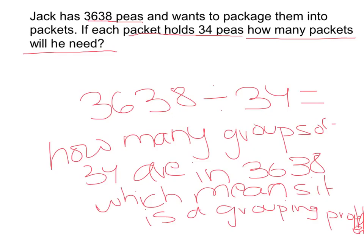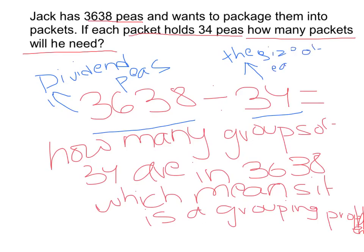In this problem, the dividend means the total number of peas. The divisor is the size of each group, which means how many peas in each packet. And the quotient will mean the number of groups.